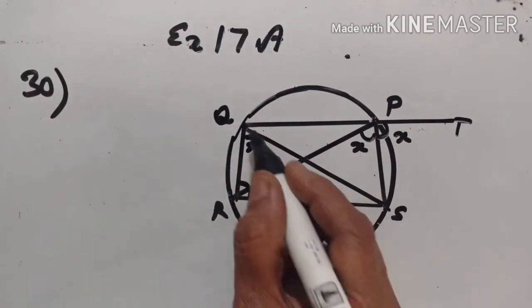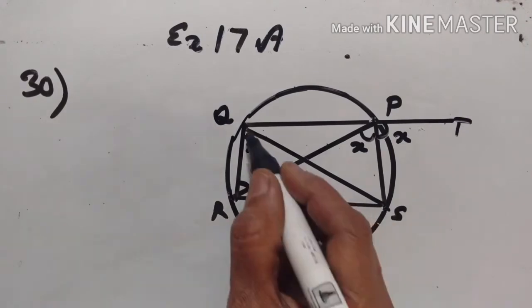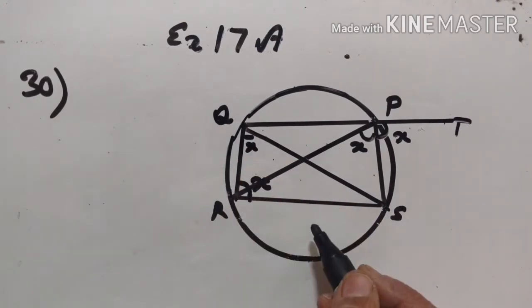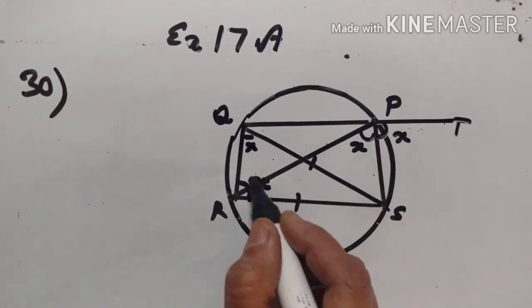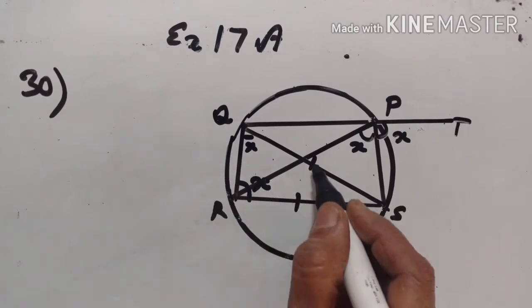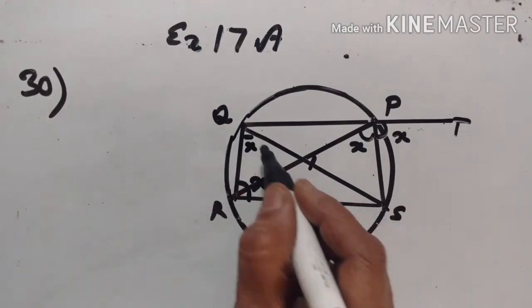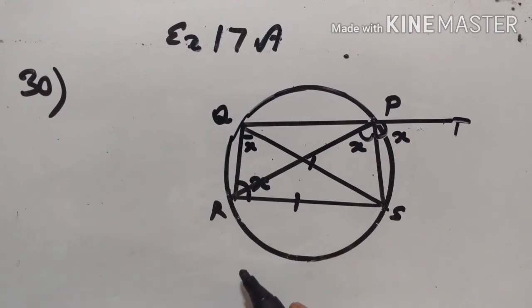Now, in triangle SQR, angle SQR is equal to angle SRQ. Therefore, the sides opposite equal angles are equal. Therefore, SQ is equal to SR. Proved.